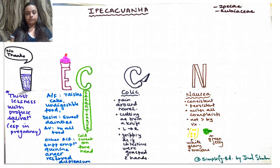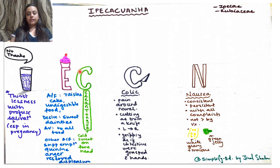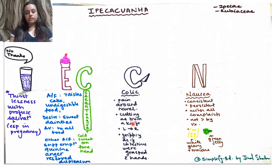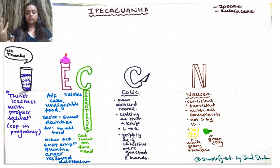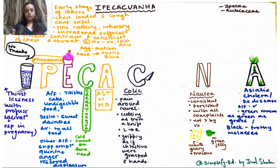The other C stands for colic. There is pain around the navel with a cutting sensation as from a knife — going from left side to right side — and gripping as if the intestines were grasped with the hand. Two important sensations: knife-like cutting, and grasping with the hand, around the navel going left to right.